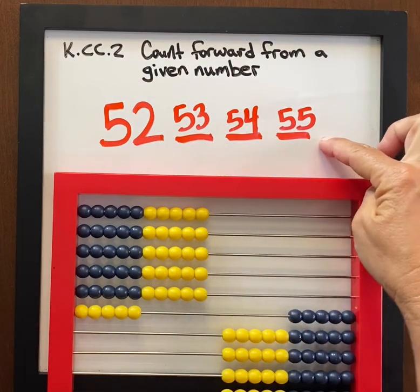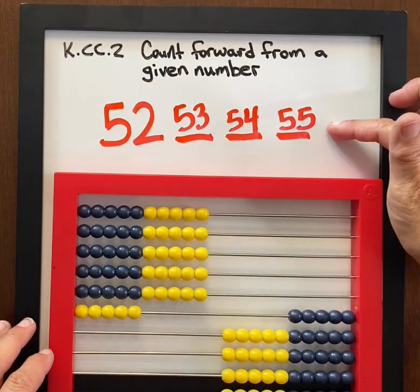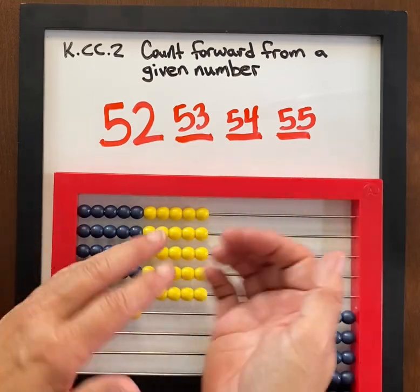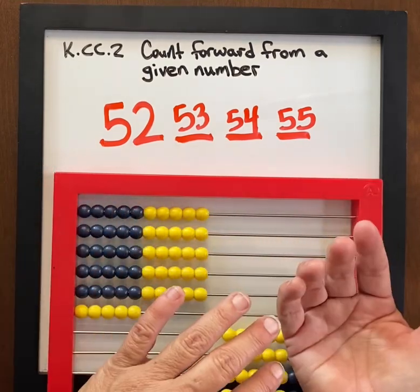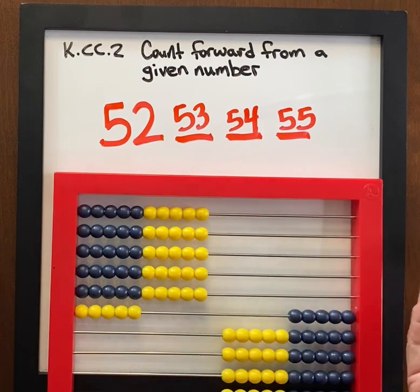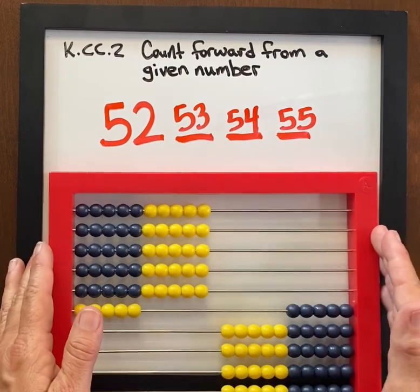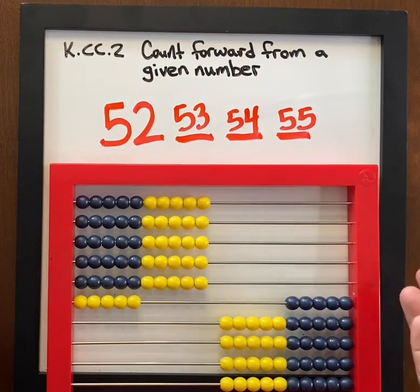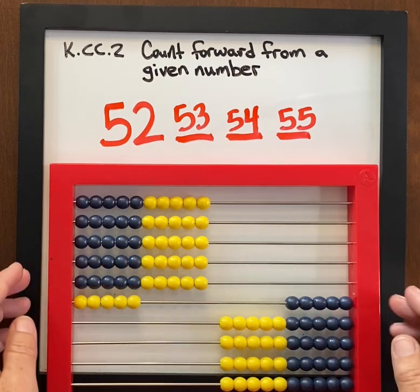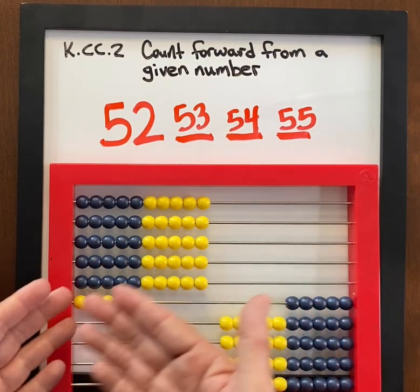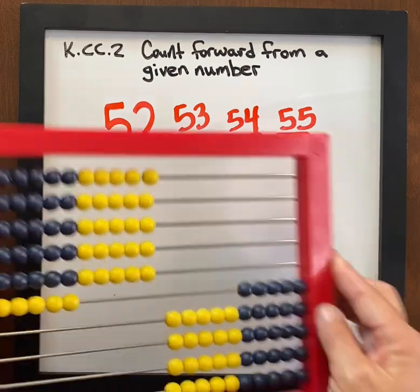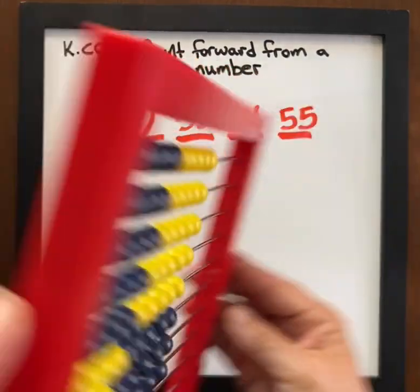What's another name — just a way to say 5 tens 5? Fifty-five. I'm constantly going back and forth between the 10s and 1s language and having them say the number that we say normally, because we don't talk in that language every day. I have 55 of something. So this is the conceptual way to count forward from a given number.